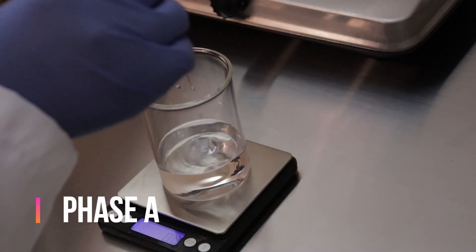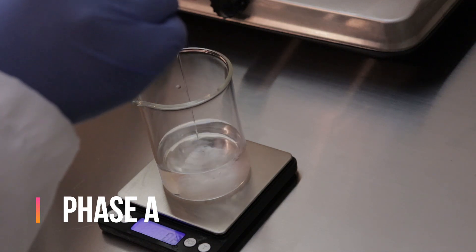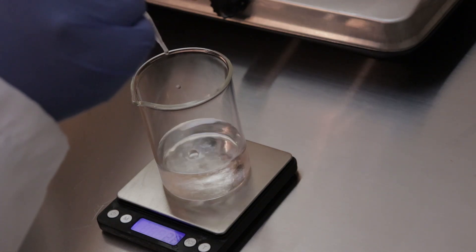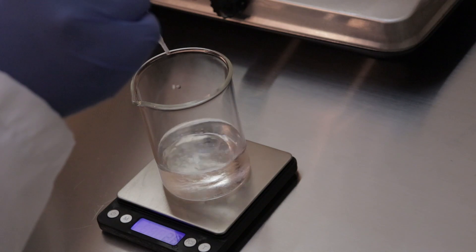Starting with phase A, I've already weighed out 81.90 grams of water and now I'm just adding in four grams of propanediol. Once I finish adding the humectant, I'm going to continuously stir until phase A is completely homogenous.